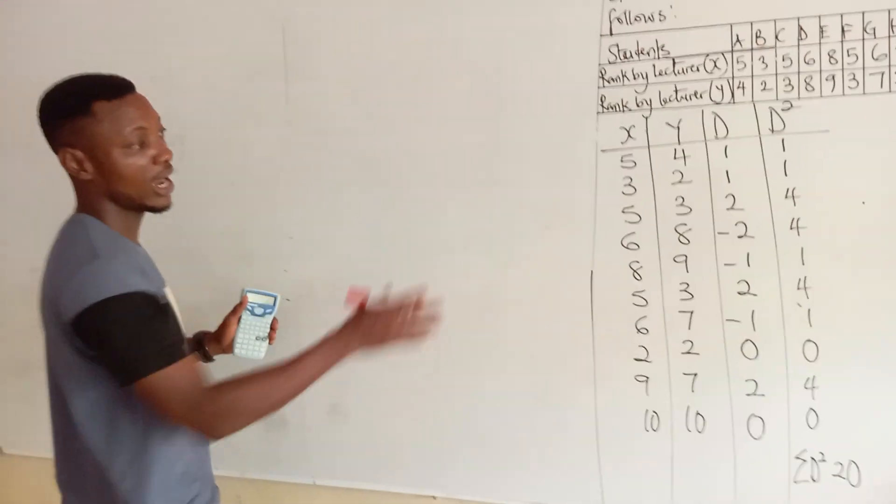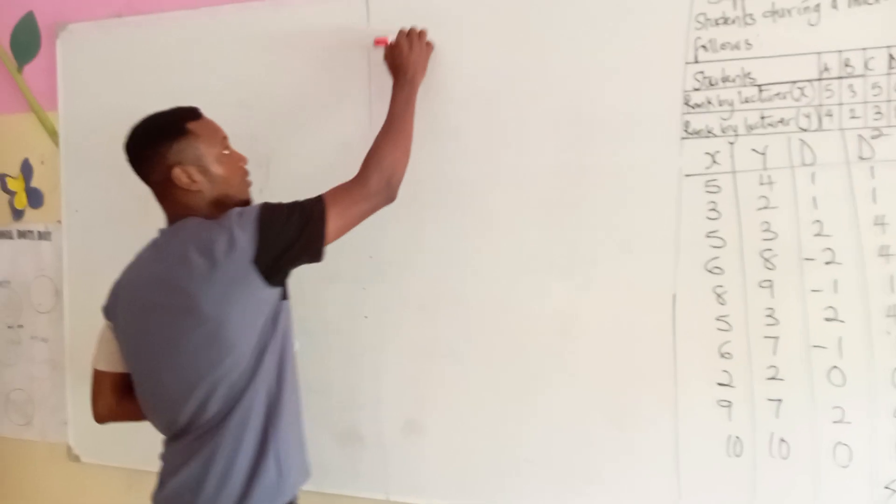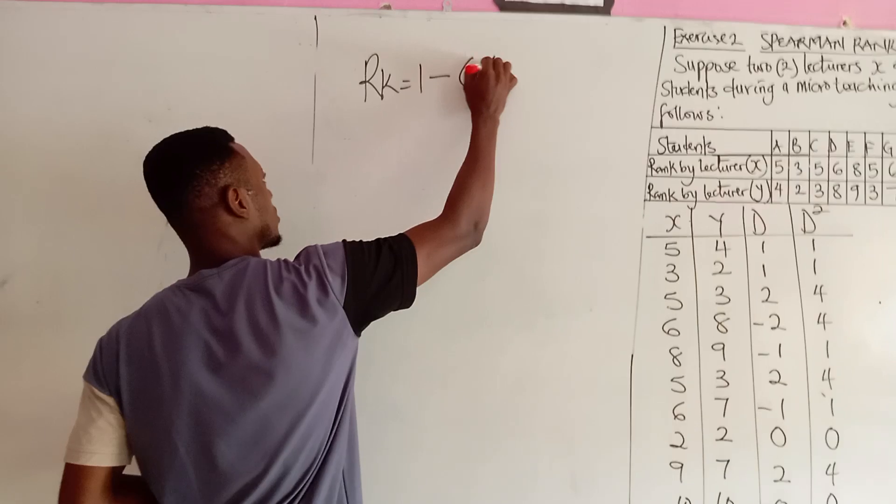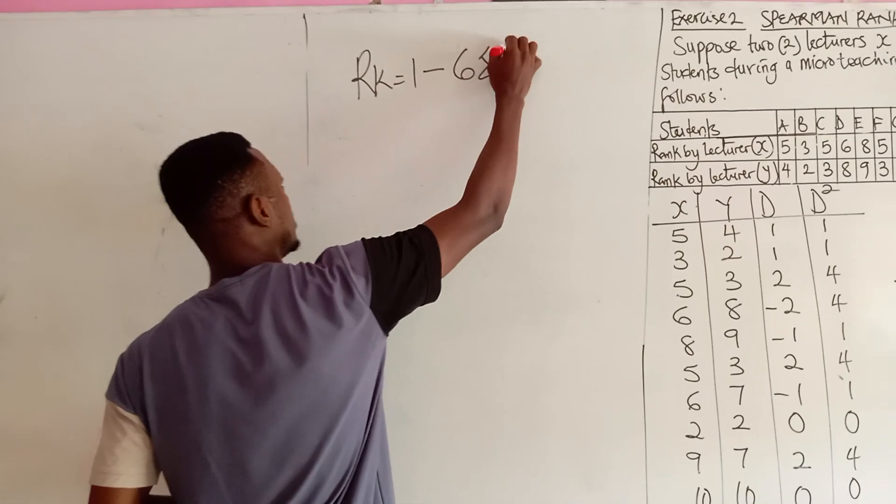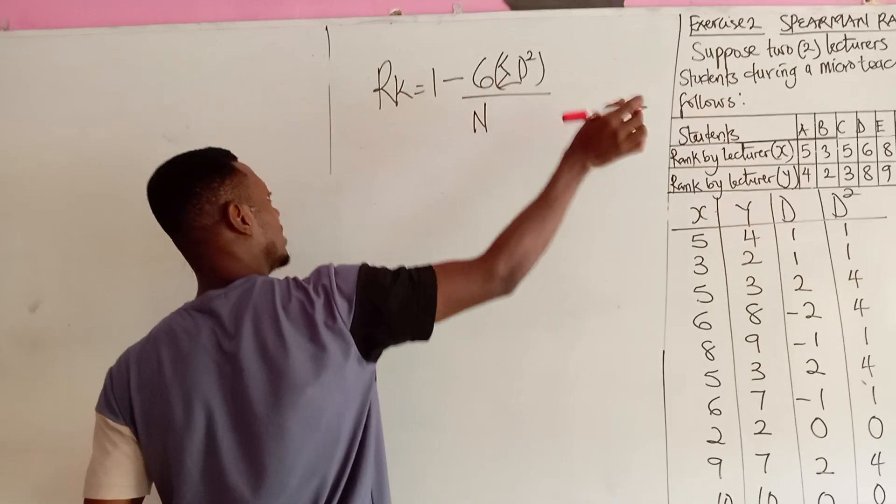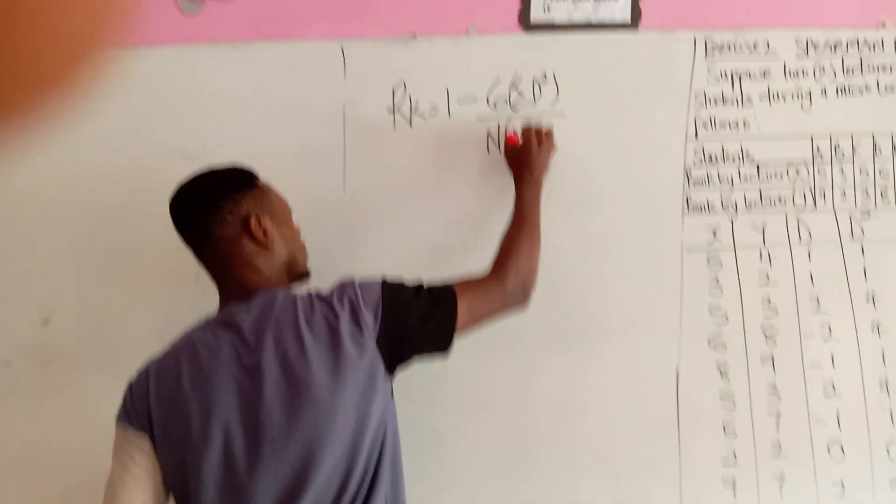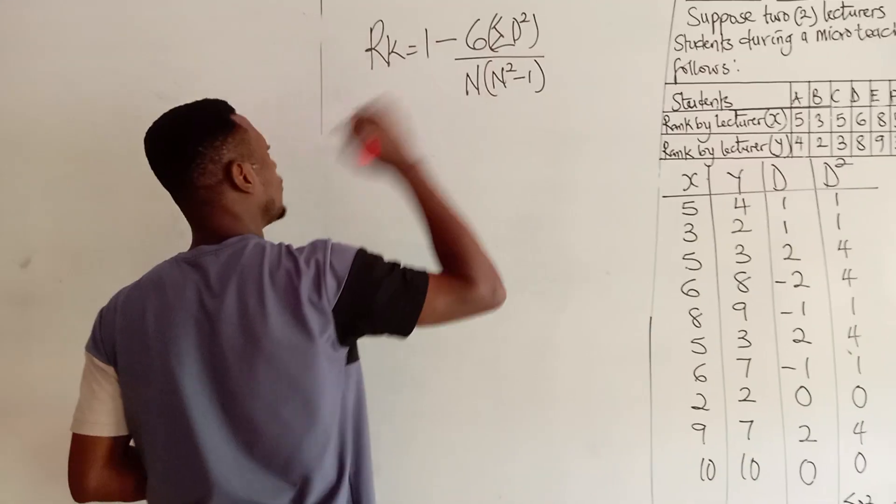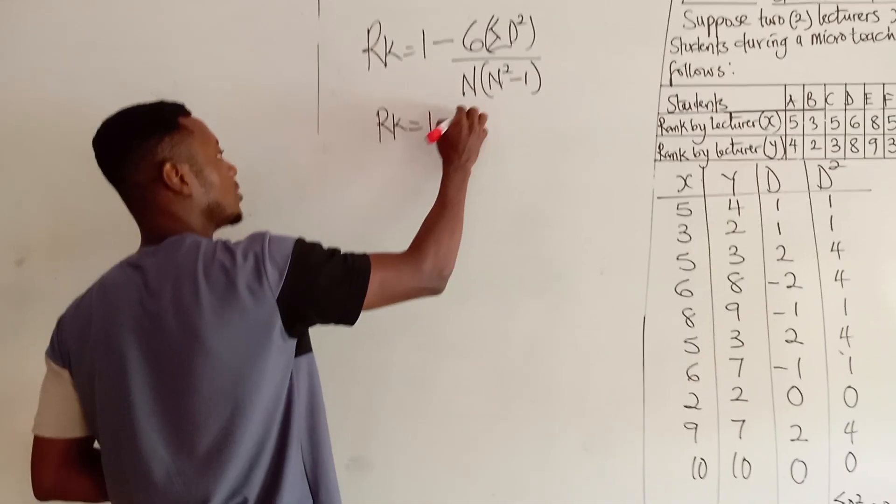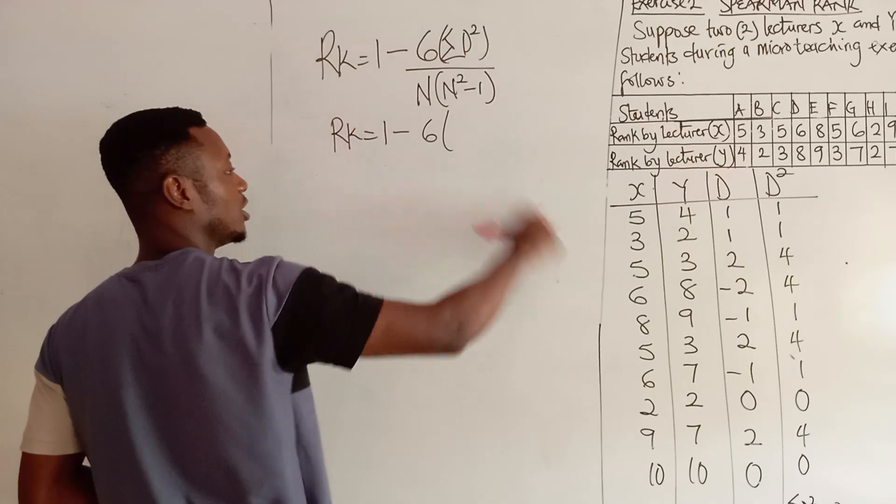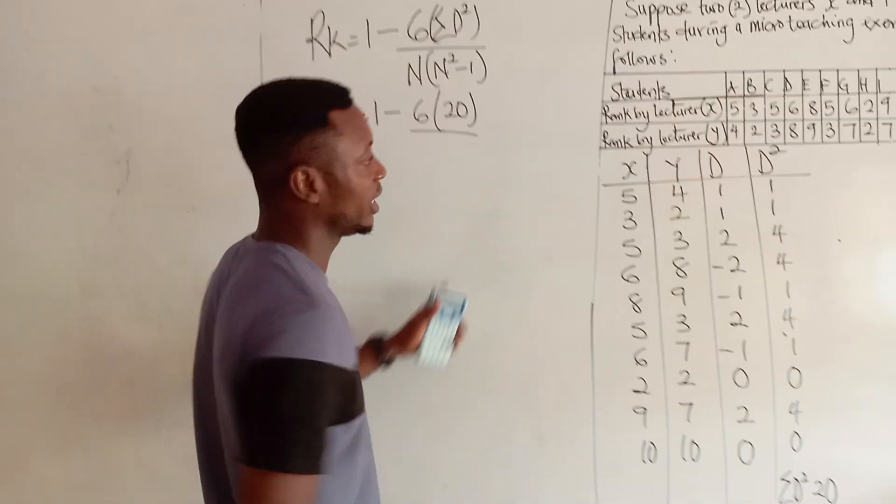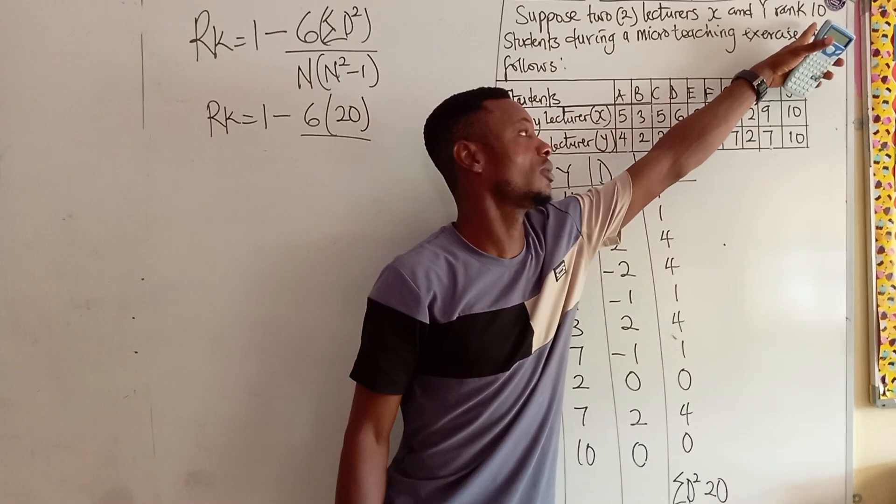Now, come along to our formula after getting our D². Our formula is rank is equals to 1 minus 6 summation of sigma D² divided by number of data, open bracket, number of data squared minus 1. Now, this will give me rank. Now, this will give me rank is equals to 1 minus 6 summation D² is 20.